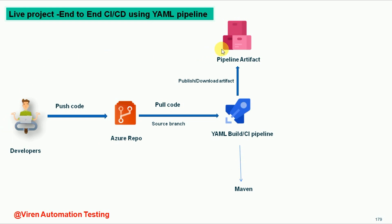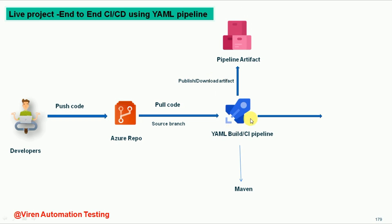This setup I have done first with the Microsoft hosted agent, which has VM machines already set up by Microsoft. The problem is that when we try to access the Microsoft hosted agent, we are not able to access the project where we are going to deploy. We need to prepare our own agent machine — we call this the self-hosted machine. In a real-time scenario you need to create your own agent VM machine, and for that you can use Azure VMs, Google Cloud, or an AWS EC2 instance.